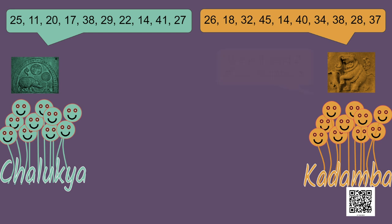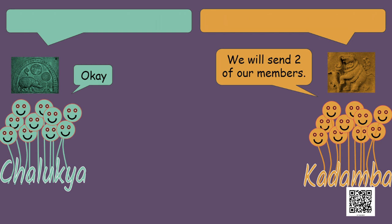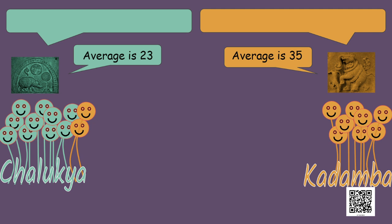Kadambas said, as we have a higher average, we will send 2 of our members to your team, and then our averages will get closer. So Chalukyas agreed, and Kadambas sent 2 of their members. Again they calculated their averages. Surprisingly, Chalukyas' average had reduced to 23 and Kadambas' average had increased to 35. Children, how is this possible?